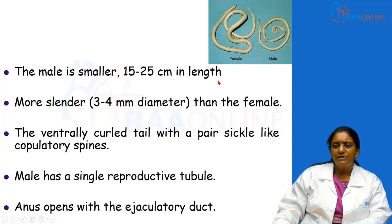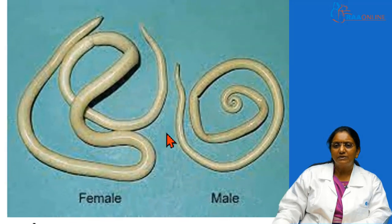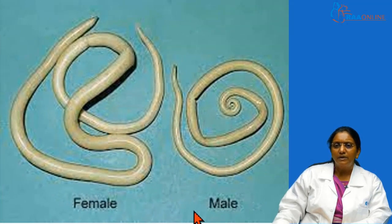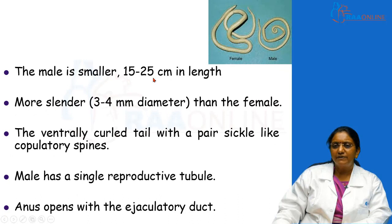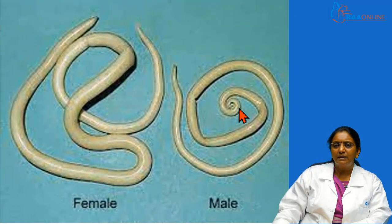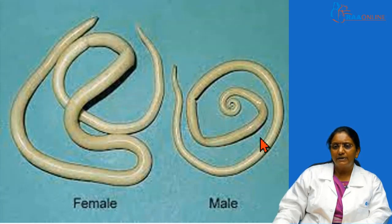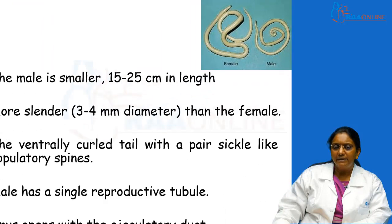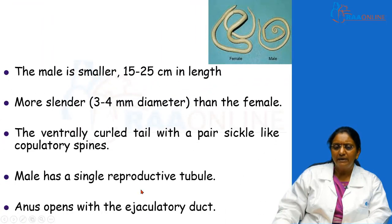Now coming to the morphology of the two worms in particular. The male worm is shorter — 15 to 25 centimeters in length — and slightly slender compared to the female, with a diameter of 3 to 4 millimeters. The ventrally curved tail end can be seen here; it is coiled or curled. Inside the body cavity there is only a single reproductive tubule, and at the tail end the anus opens along with the ejaculatory tract, meaning the reproductive system and the alimentary system have a common opening.